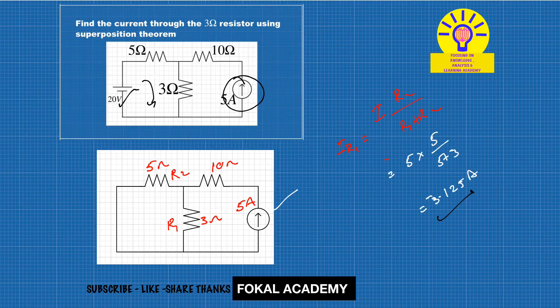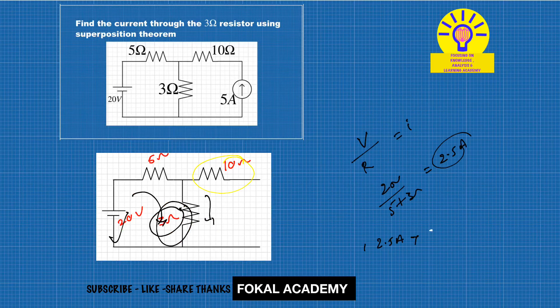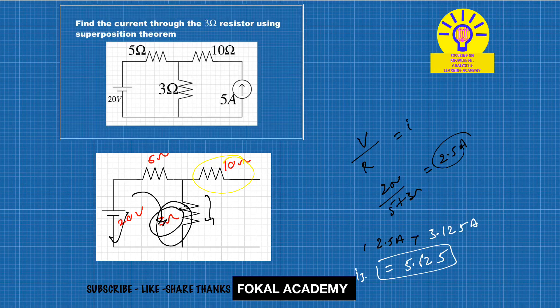The total current flowing in the 3-ohm resistor comes out to 5.625 amperes. This is the value of I through the 3-ohm resistor, and this is the process of the superposition theorem for calculating the current. Thanks for watching — please subscribe to my channel and don't forget to hit like on the video.